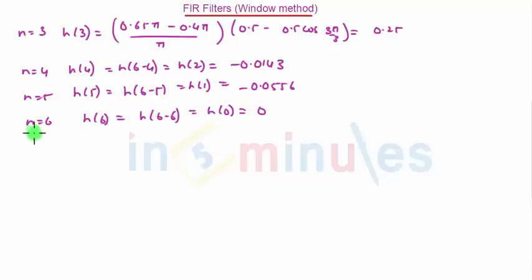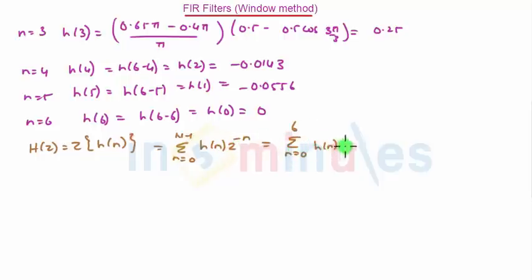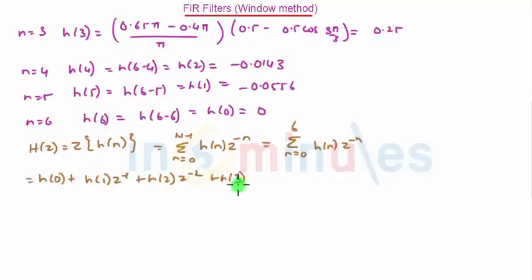Now we will find the transfer function. The transfer function H(z) is equal to the Z-transform of h(n), which is the summation from n=0 to N−1 of h(n)·z^(−n). That is summation from n=0 to 6 of h(n)·z^(−n), giving: h(0) + h(1)·z^(−1) + h(2)·z^(−2) + h(3)·z^(−3) + h(4)·z^(−4) and so on.